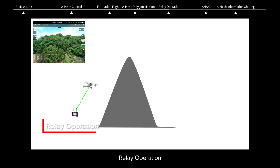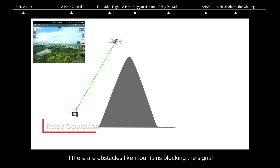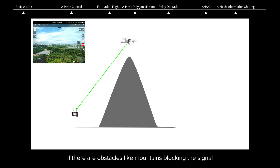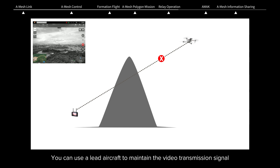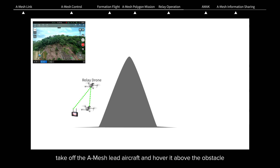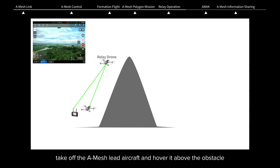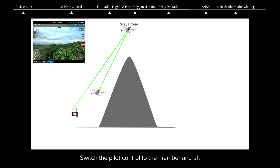Relay Operation: For a single aircraft, if there are obstacles like mountains blocking the signal, the aircraft will lose connection with the remote controller. You can use a lead aircraft to maintain the video transmission signal. First, take off the A-Mesh lead aircraft and hover it above the obstacle.